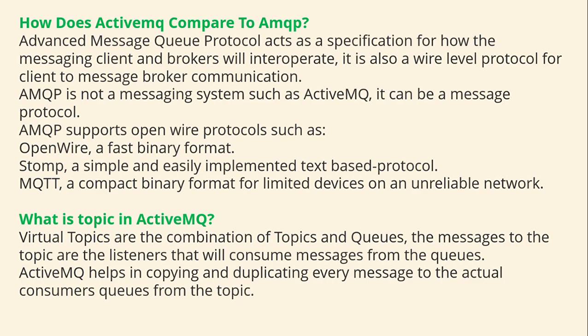How does ActiveMQ compare to AMQP? AMQP (Advanced Message Queuing Protocol) acts as a specification for how messaging system clients and brokers communicate, and is also a wire-level protocol. AMQP is not a messaging system like ActiveMQ — it is a message protocol. ActiveMQ supports open wire protocols such as OpenWire (a fast binary format), STOMP (a simple text-based protocol), and MQTT (a compact binary format designed for limited devices on unreliable networks).